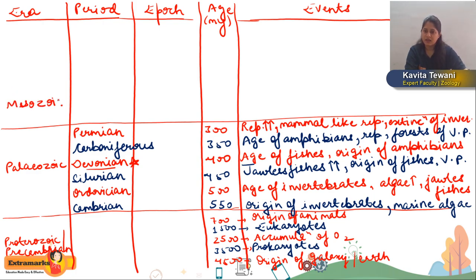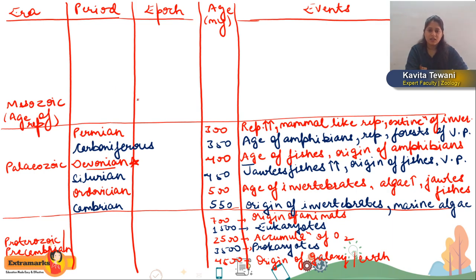The third era is the Mesozoic era, which is considered the Age of Reptiles. It is divided into three periods: Triassic, Jurassic, and Cretaceous. Using approximate ages: 250, 200, and 150 million years.